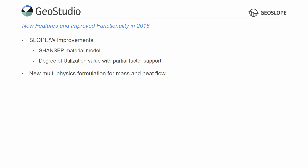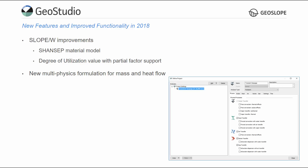GeoStudio 2018 includes a new multi-physics solver for improved coupling of mass and heat transfer processes. This solver eliminates the need for VATOS-W as a standalone product, and the functionality of VATOS-W will now be available in SEEP-W and TEMP-W.